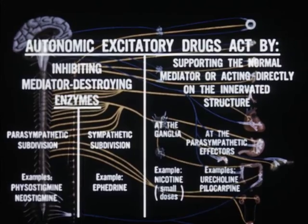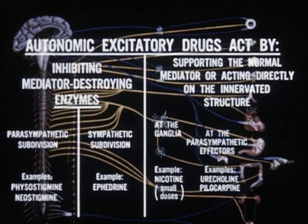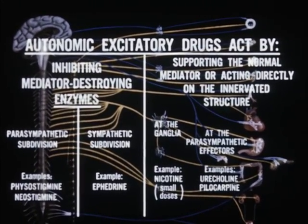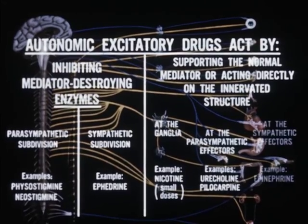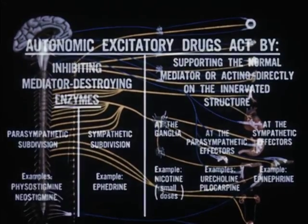Small doses of nicotine provide this action at the ganglia. Urocholine, or pilocarpine, cause this effect at the parasympathetic effectors. In a similar way, excitation or stimulation may occur at sympathetic effectors, and an example of this type of drug is epinephrine.